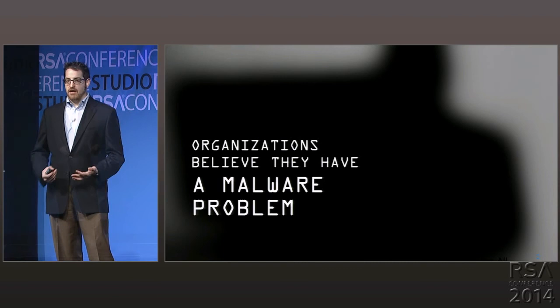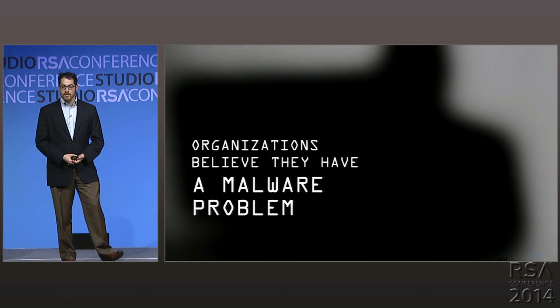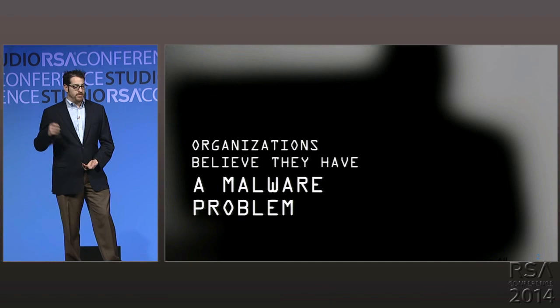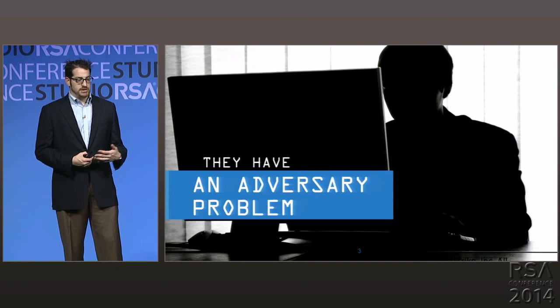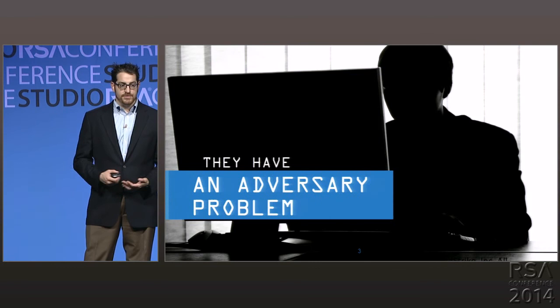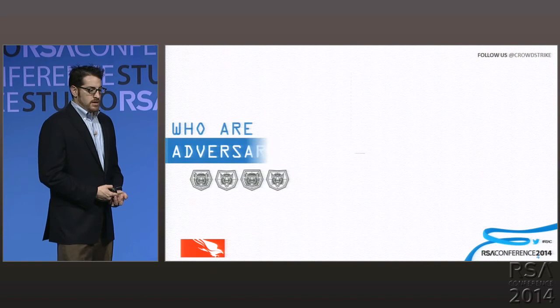At CrowdStrike, we believe that you don't have a malware problem. You have a lot of things that may look like a malware problem — malware, adversaries with command and control, and all of these things on your network. But what that comes down to is not a malware problem. You actually have an adversary problem, and that is a very different type of problem to start solving in your enterprise. You need to use intelligence to look at how to deal with these adversaries that are inside your infrastructure.